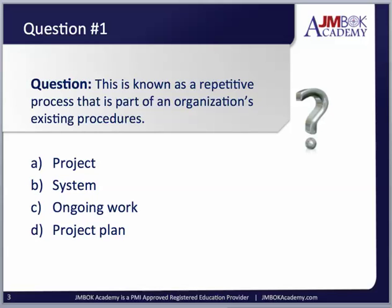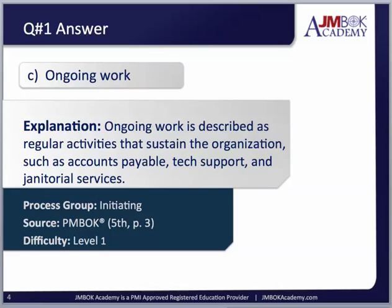Now we have B, system, or C, ongoing work. The word 'system' is not used very much in the PMBOK, the Project Management Body of Knowledge, to describe what we're talking about. Option C, ongoing work, just sounds like the right answer — and it is. Ongoing work is described as regular activities that sustain the organization, such as accounts payable, technical support, and janitorial services.